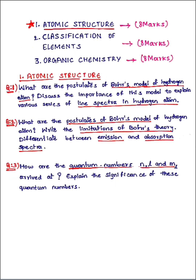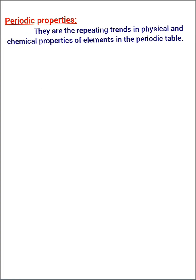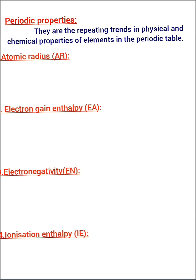Now let's talk about the second important chapter for eight marks: classification of elements. There are three important questions in this chapter. The first question is: what is periodic property and how do the following properties vary in a group and period — atomic radius, electron gain enthalpy, electronegativity, and ionization enthalpy? Your answer should first define the term 'periodic property' and then write the variations of these properties in group and period.